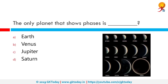The only planet that shows phases is Venus. Through a small telescope it is possible to see Venus undergo phases just like the moon. This occurs because from our point of view on Earth, we see only the parts of Venus illuminated by sunlight at any given time. However, unlike the moon, Venus is usually brighter in its crescent phase than in its full phase.